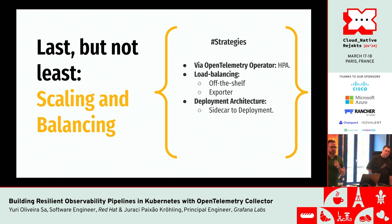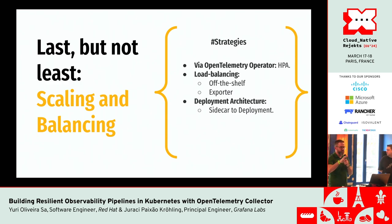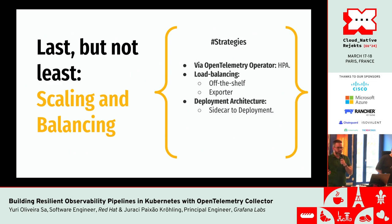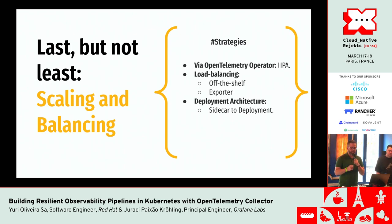Last but not least, we defined the path to achieve resilience in observability pipelines. The last part is scaling and balancing. In this demo, we installed the Kubernetes OpenTelemetry Operator, which helps manage OpenTelemetry Collector instances. Our recommendation would be using this OpenTelemetry Operator because it applies a native HPA concept. So if you need to scale your OpenTelemetry Collectors, you can use this configuration.